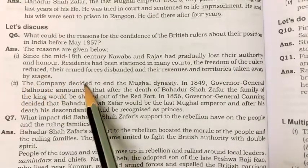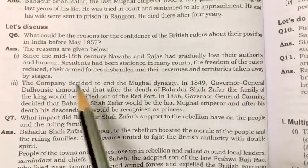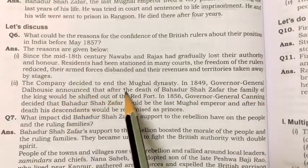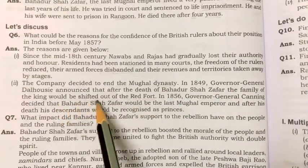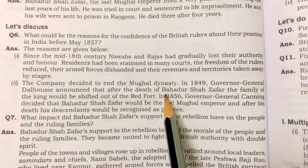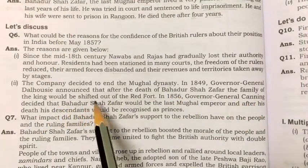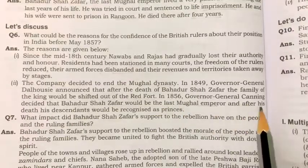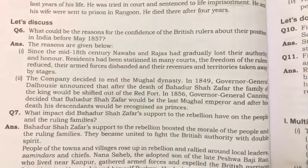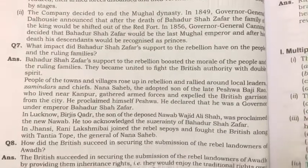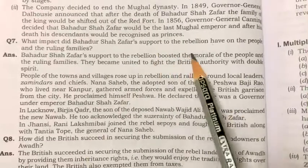The company decided to end the Mughal dynasty. In 1849, the Governor General Lord Dalhousie announced that after the death of Bahadur Shah Zafar, the family of the king would be shifted out of the Red Fort. In 1856, Governor General Canning decided that Bahadur Shah Zafar would be the last Mughal emperor and after his death his descendants would be recognized only as princes.